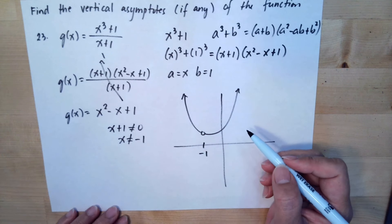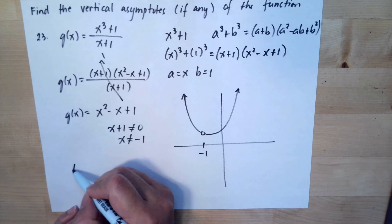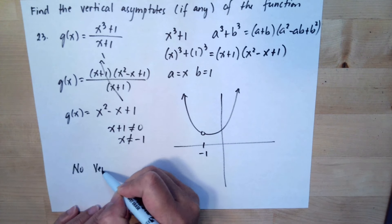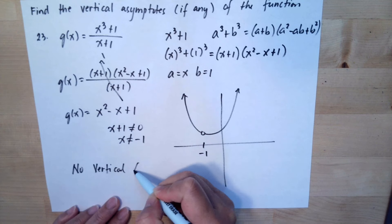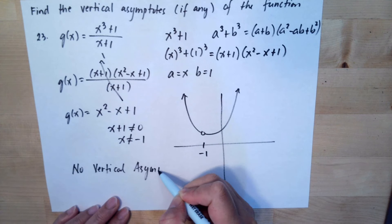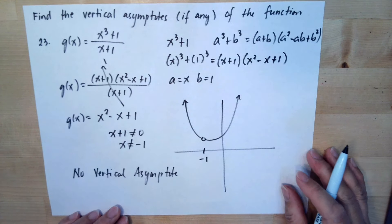So there is no vertical asymptote for this. No vertical asymptote. So this is our answer for this problem.